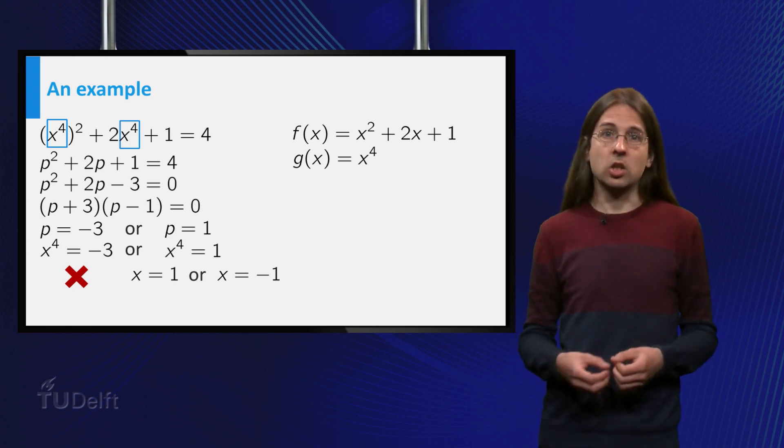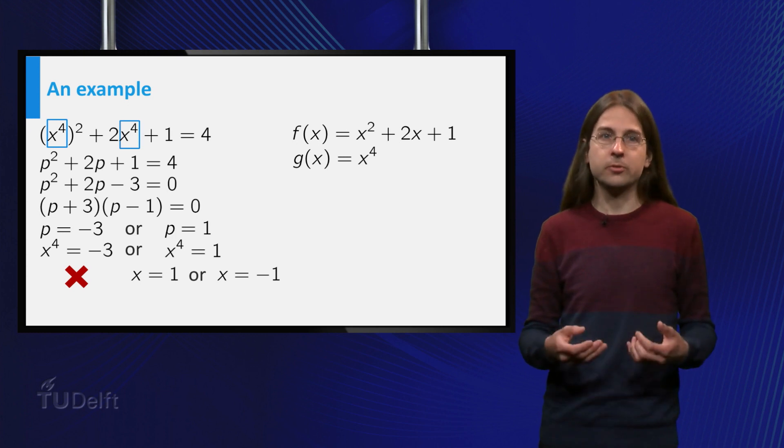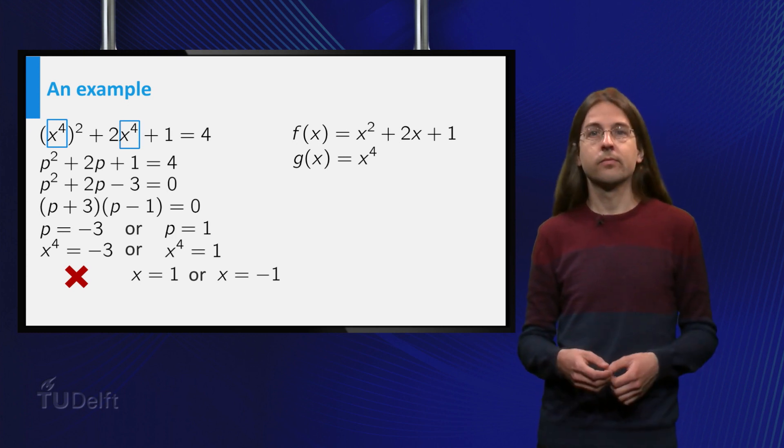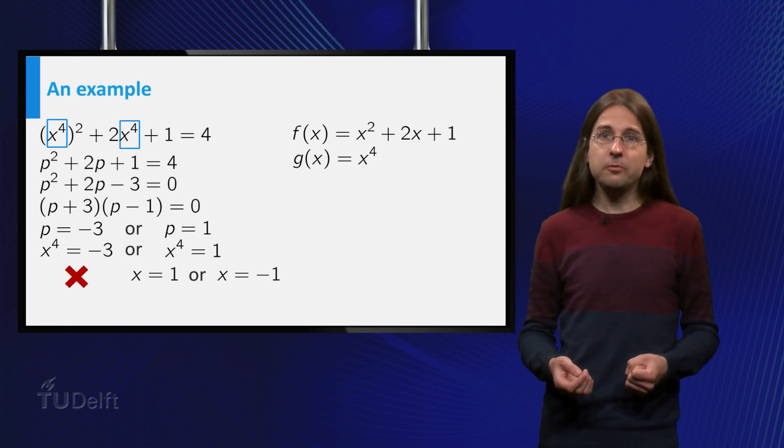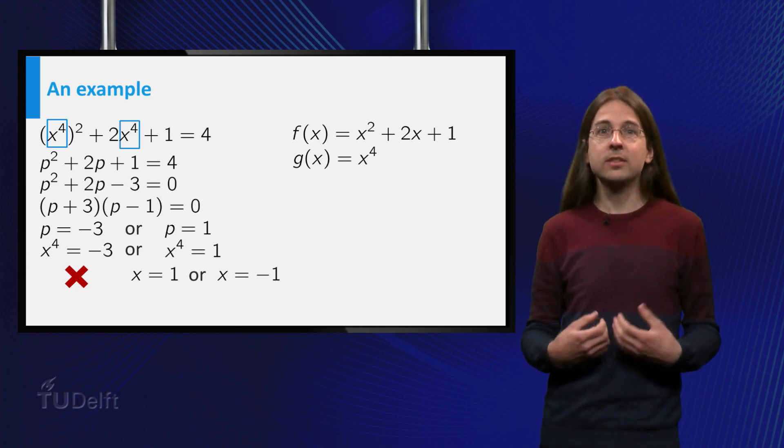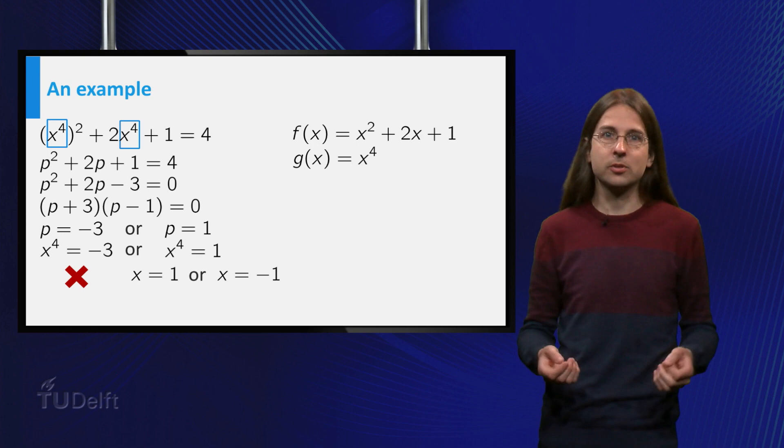Thus these are the only two solutions to the complicated equation x⁸ + 2x⁴ + 1 = 4. Now try to figure out how you can explicitly see the complicated functions from the practice exercises as compositions.